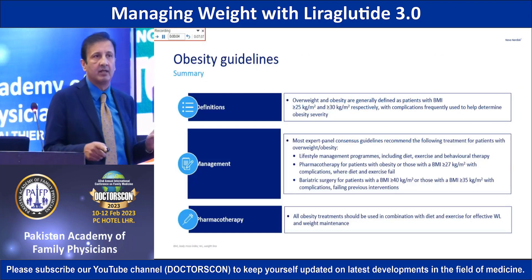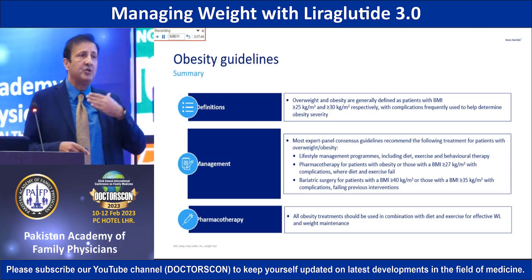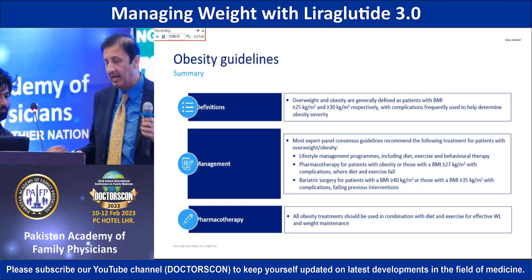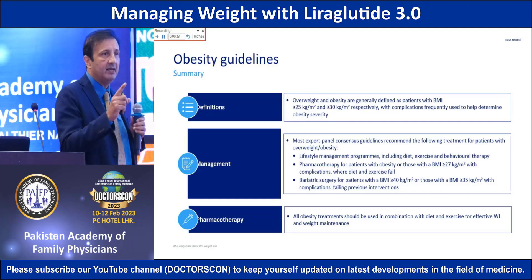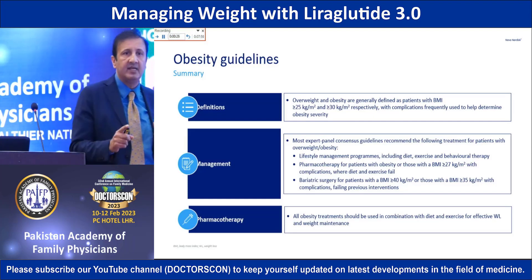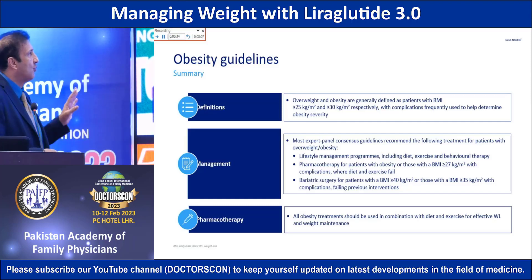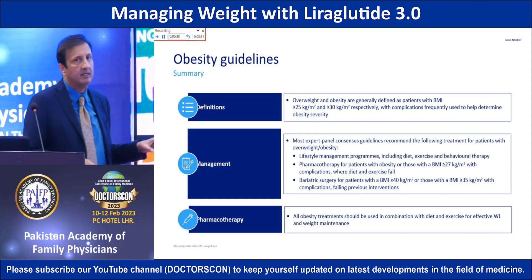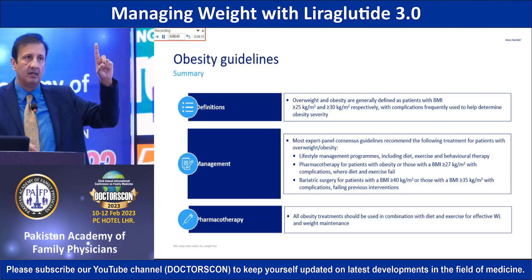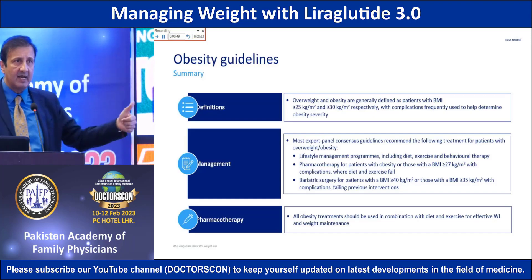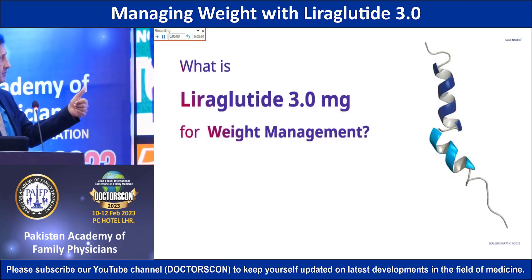Regarding obesity guidelines: as a physician, our management approach must prioritize choosing a therapy where the risk of weight gain is minimal and weight loss is a big plus. Lifestyle intervention is top of the line — weight loss, regular exercise, diet modification. Pharmacological therapy is also available. I'll briefly cover a few of the GLP-1 agents. The first GLP-1 launched in the world was in 2006, under the name Exenatide, injected twice a day, which was not convenient.